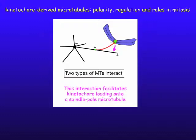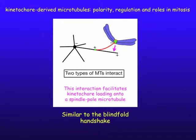We argue that this is similar to the blindfold handshake played by Etsushi and Shinya. By extending microtubules from both a spindle pole and a kinetochore, they can find each other more quickly, like the blindfold handshake. We also found that kinetochore-derived microtubules disappear quickly once the kinetochore is loaded onto a spindle pole microtubule. Thus, a kinetochore-derived microtubule has a short lifetime and does not become a part of the metaphase spindle.